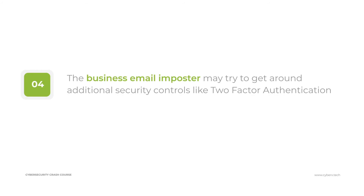Once the individual logs in, if attackers come across two-factor authentication, they take one of two actions: they stop and give up, or they try to get around it. I want you to listen to how we did this on a penetration test. This is an actual recording from a call we made. Some parts are edited out for security reasons, but take a listen to how we were able to get around two-factor authentication at this organization.